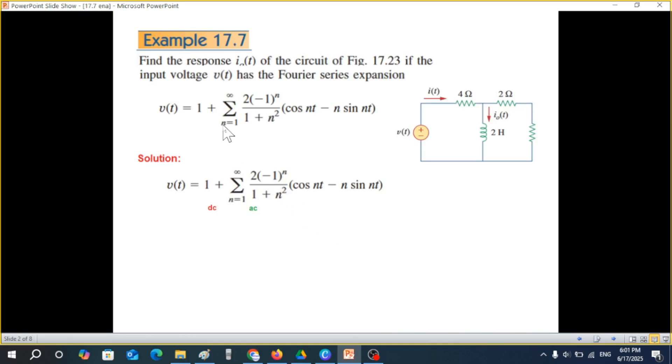Now the first thing we'll do is divide the input signal into two parts. This one does not have any time variable with it, therefore this is constant. This is called DC voltage. And the one which has the time variable with it, that is the AC signal. So we'll treat them separately.